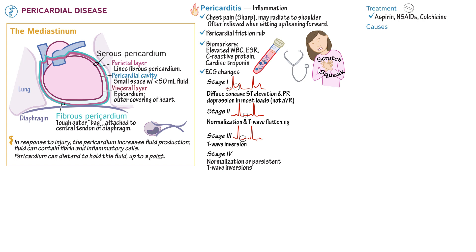There are several important causes of pericarditis, though many cases are idiopathic. Pathogens — especially HIV, Coxsackievirus, streptococcus, staphylococcus, and tuberculosis — can cause pericarditis. It's thought that many idiopathic cases are actually caused by viruses.